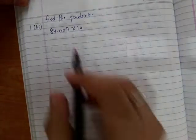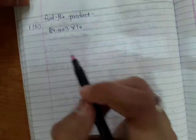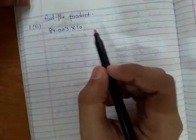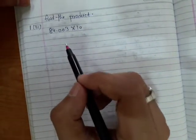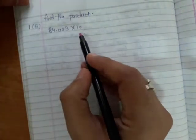Third part of question number one: find the product of 84.003 multiplied by 10. The first rule of multiplication says that on multiplying a decimal by 10, the decimal point is shifted to the right by one place.